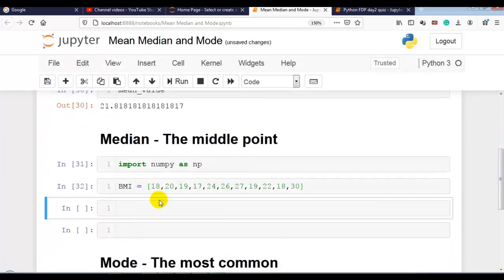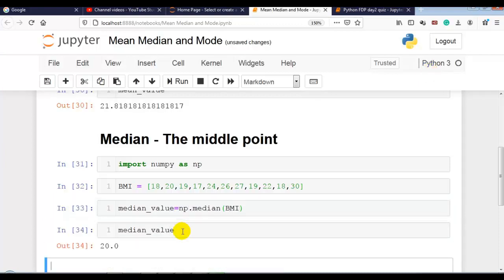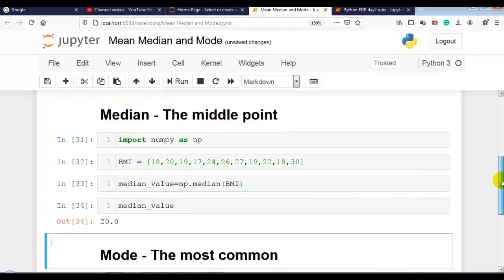Next, median value, the middle point, value in the middle. Median value is equal to np.median bmi value. Now you can see the median value.